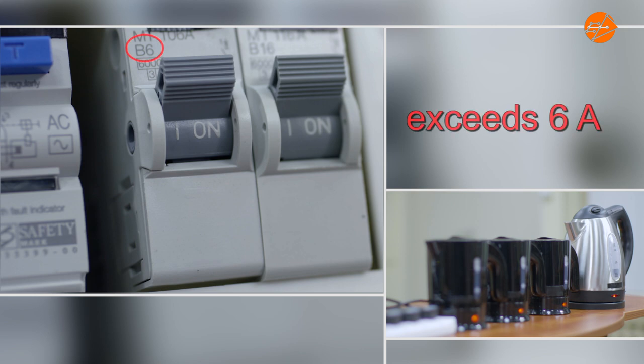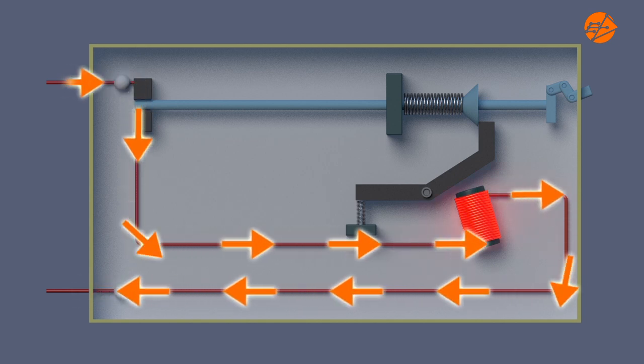When the fourth heater is connected, the total amount of current exceeds the rating of the circuit breaker. When this happens, the solenoid becomes a very strong electromagnet due to the larger current.